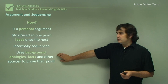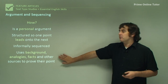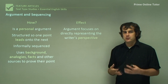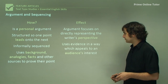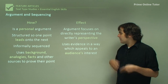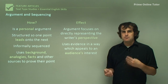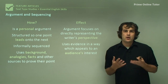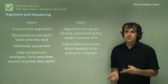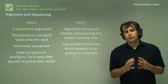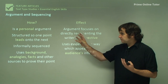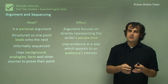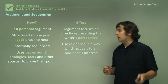They'll use evidence to prove their argument. The effect is that the argument focuses directly on representing the writer's perspective — they don't mince their words and go straight to the point. They use evidence in ways that appeal to an audience's interest; bombarding people with statistics will cause them to switch off. Feature article writers outline their point of view first, then give evidence to prove it — a useful model for essay writing too.